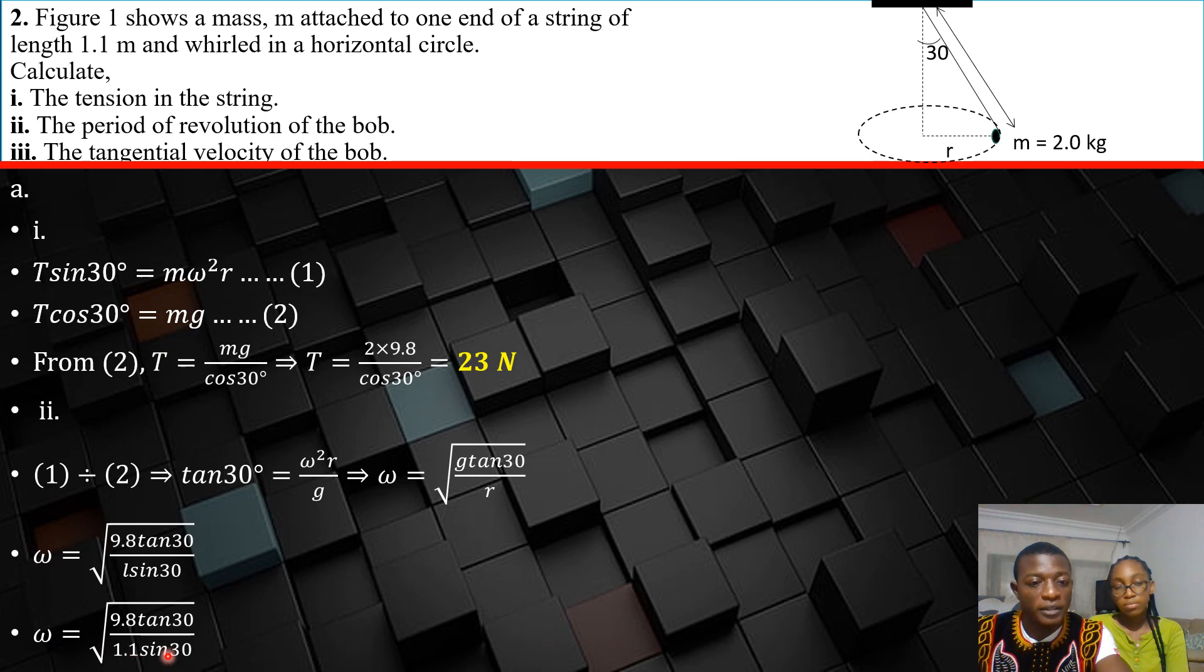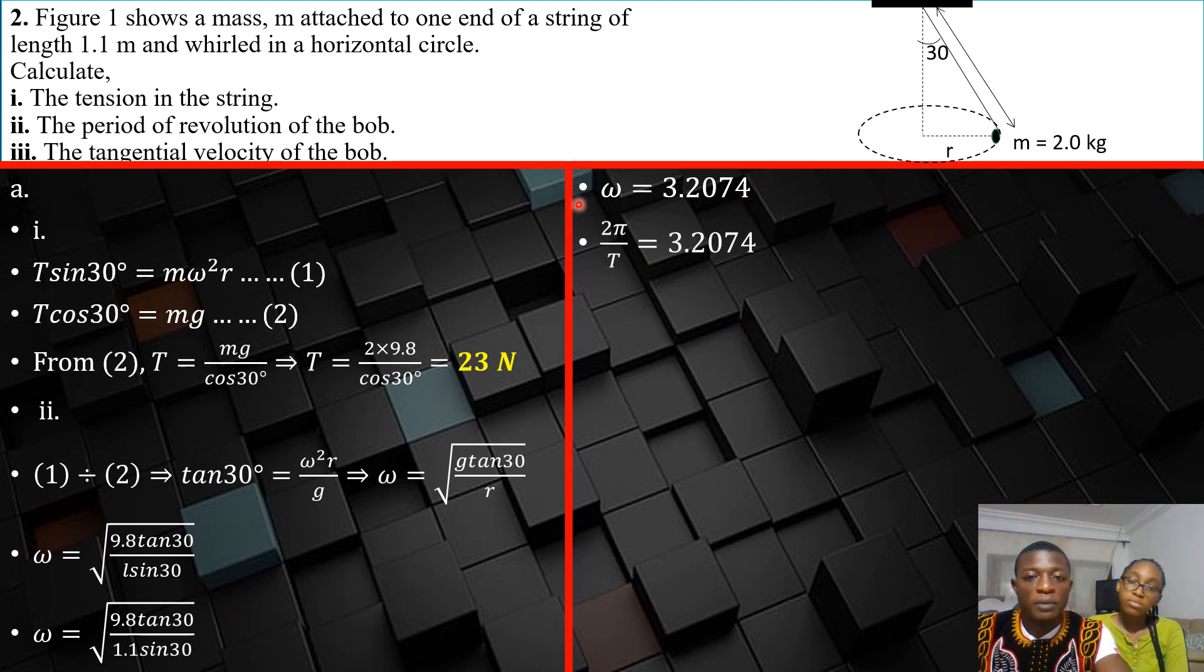So our omega is right now the square root of g over 1.1 sin 30. Put it there and simplify. Your calculator does the rest. Omega is 3.2074. Now, omega is 2π over T.